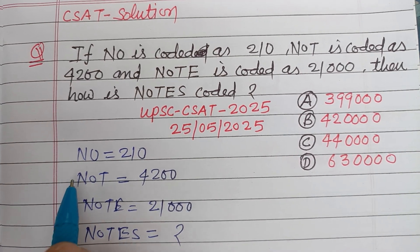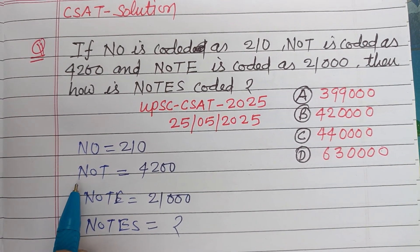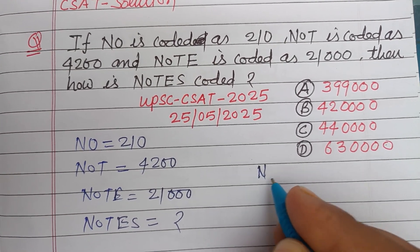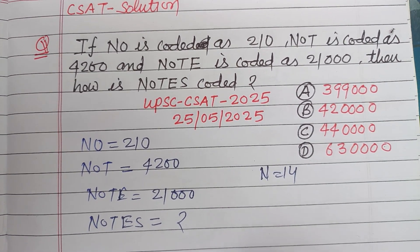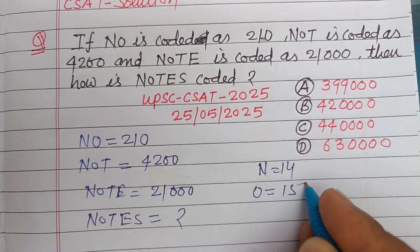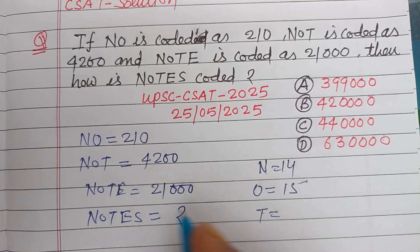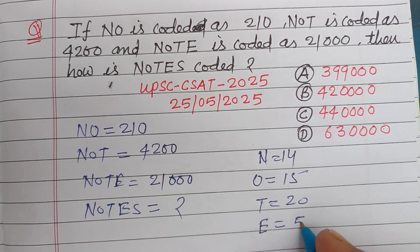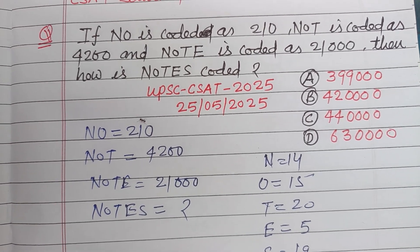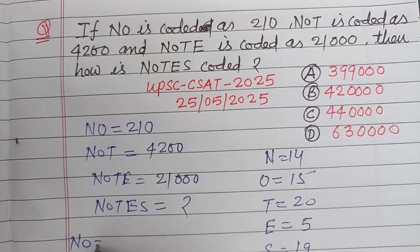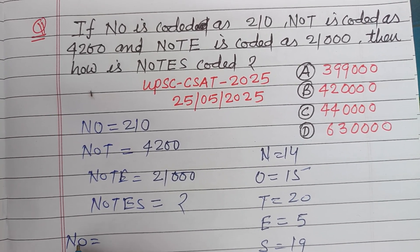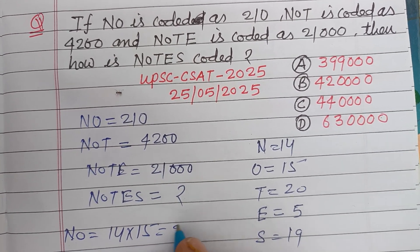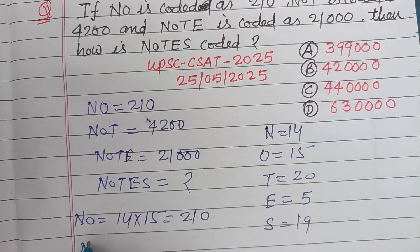First, we write the alphabet number of each letter used. In the alphabet: N is 14, O is 15, T is 20, E is 5, and S is 19. So NO means 14 × 15 = 210. This confirms the coding pattern.